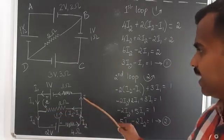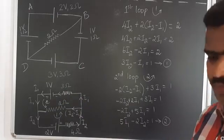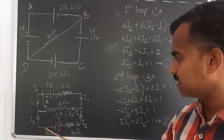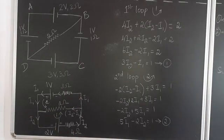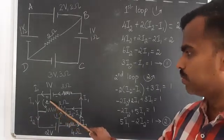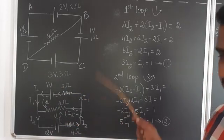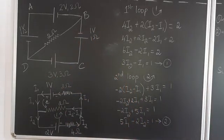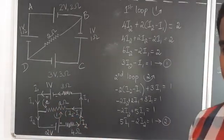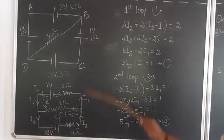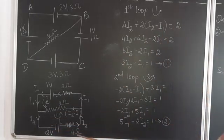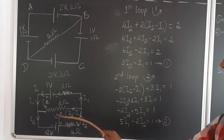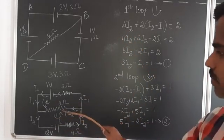The i1 current flows to the negative terminal of the 1 volt battery, and i2 current reaches the negative terminal of the 2 volt battery. This is loop 2, and this is loop 1 — both taken in the anti-clockwise direction. Now applying KVL to loop 1: 2 volts, and then 4 times i2 since the assumed current and flow are in the same direction.